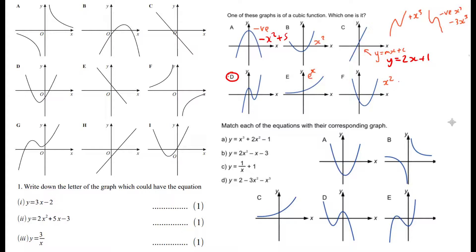That's going to be an x-squared graph that's been translated with a negative intercept, but we're not going through that now. So question 1i: it's got a y-intercept of minus two due to y equals mx plus c, it's got a positive gradient so it's going uphill, and the only one that can be is H — because it's got minus two there. If it were y equals minus 3x plus 2, that would be E. That's going to help you a lot.